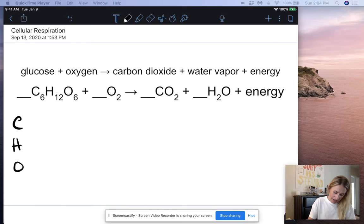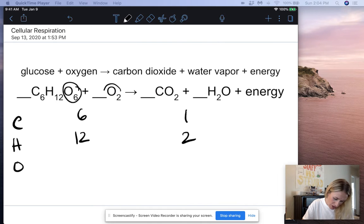If we count our atoms of carbon, we have six on the reactant side and one on the product side. For hydrogens, we have 12 on the reactant side and two on the product side. And then for oxygen, I have six plus two or eight on the reactant side and I have two plus one or three on the product side.